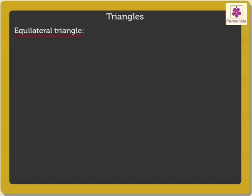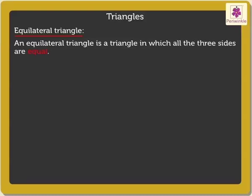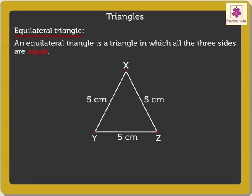Equilateral Triangle: An equilateral triangle is a triangle in which all three sides are equal. Look at the triangle XYZ. The length of each side of the triangle is 5 cm. Thus, we say triangle XYZ is an equilateral triangle.